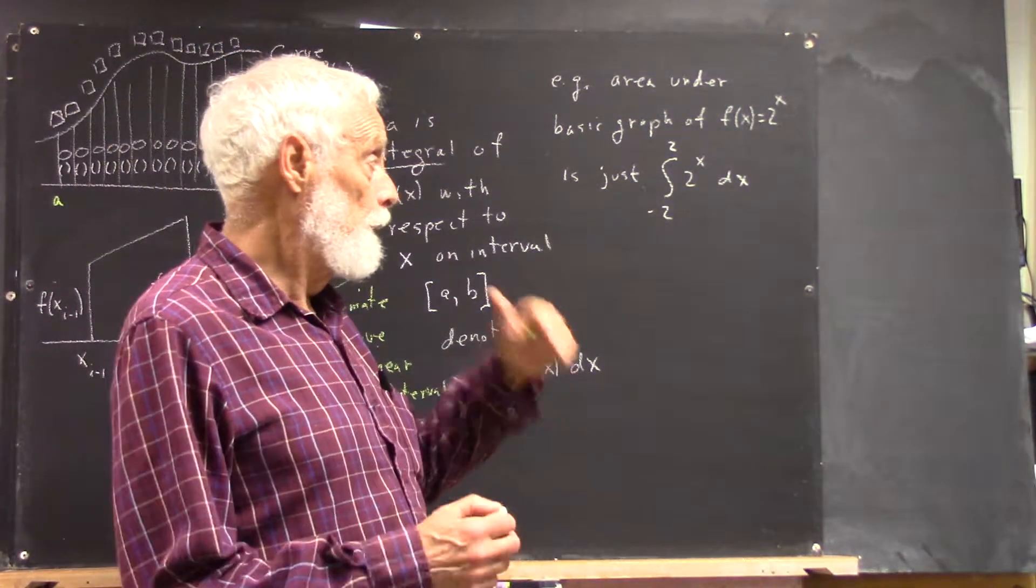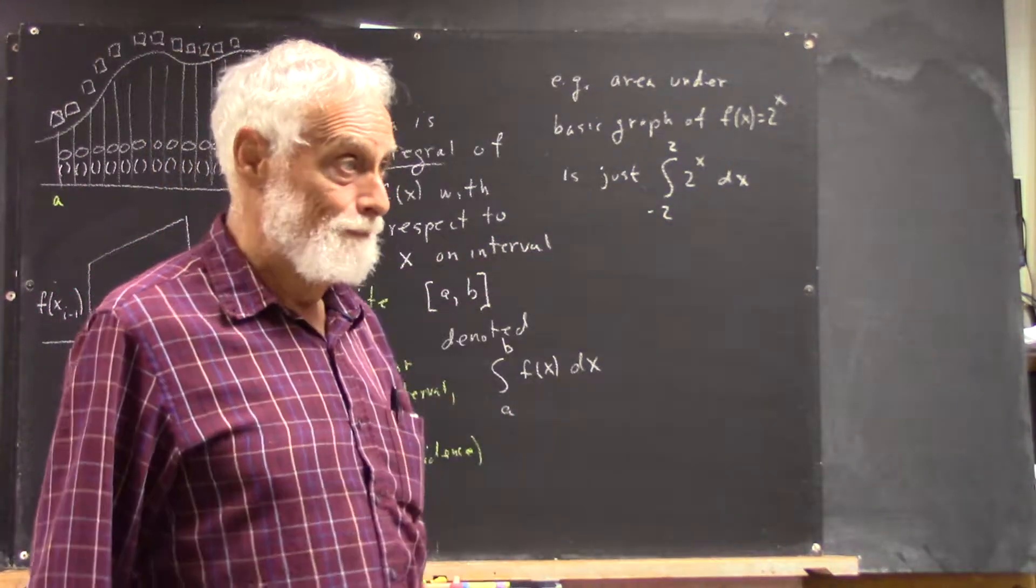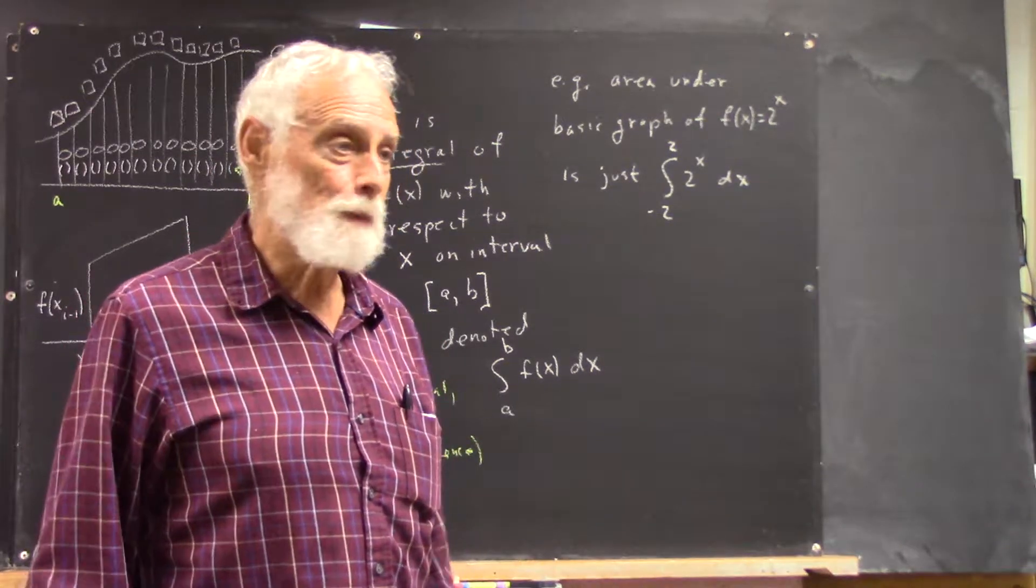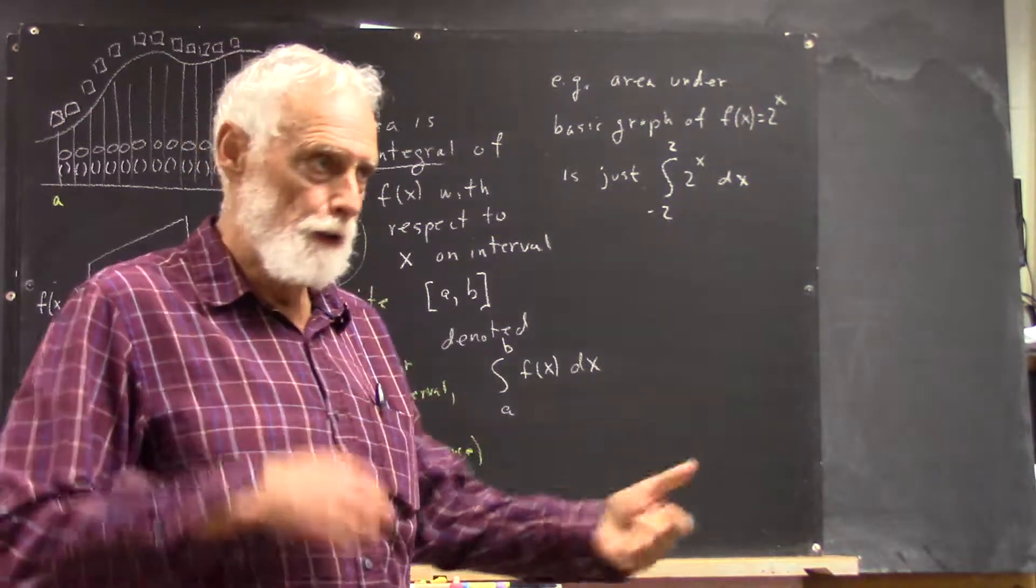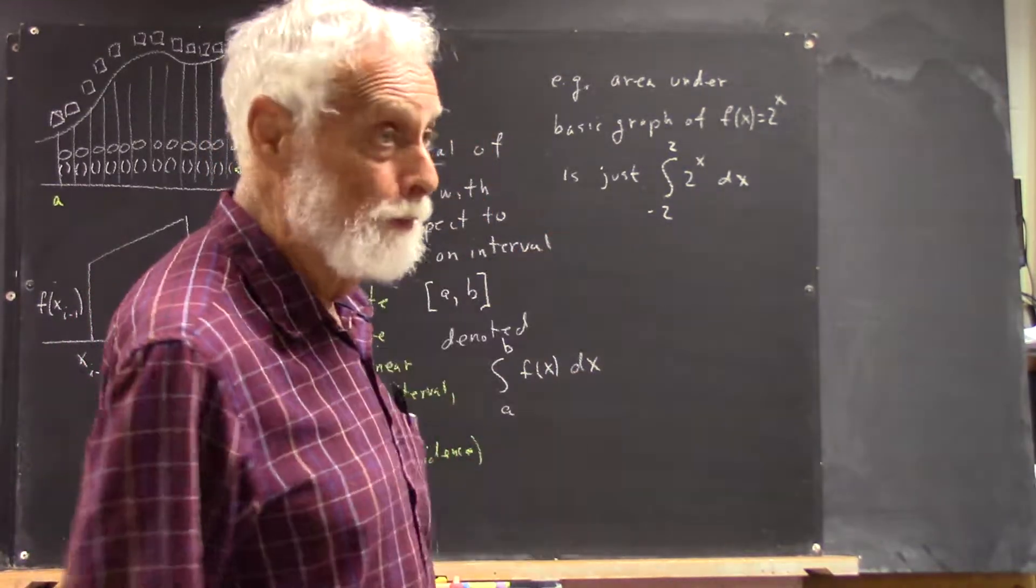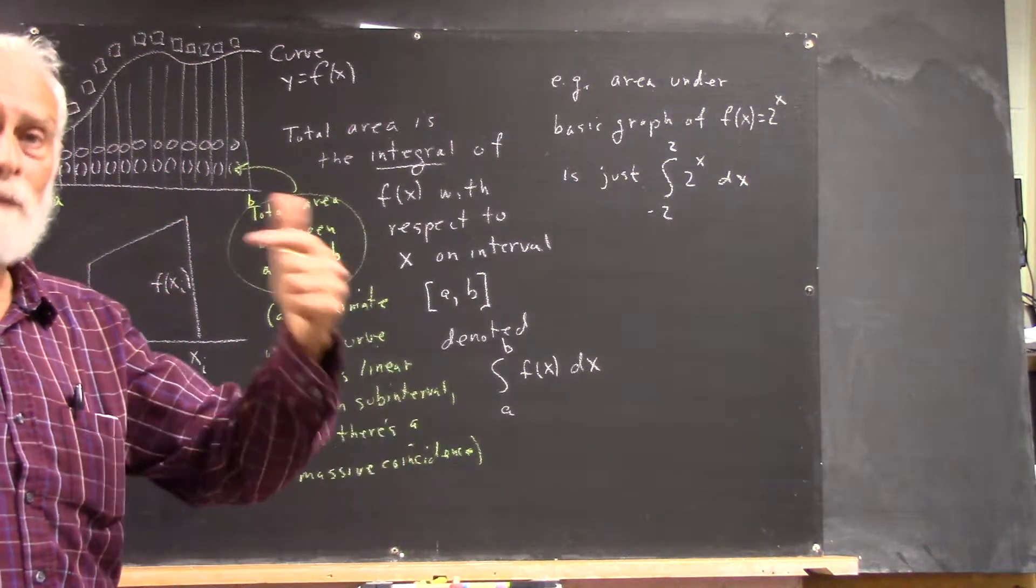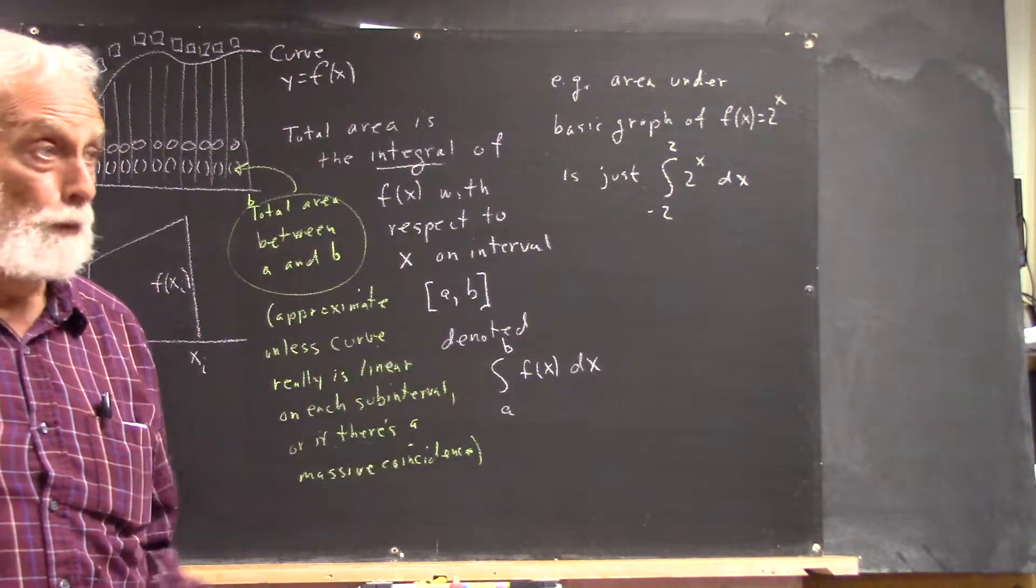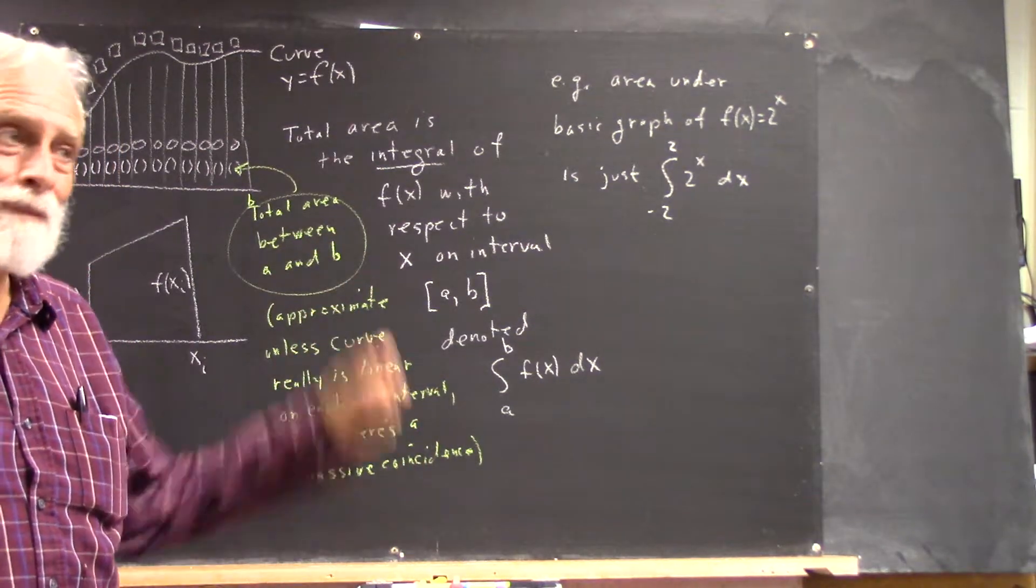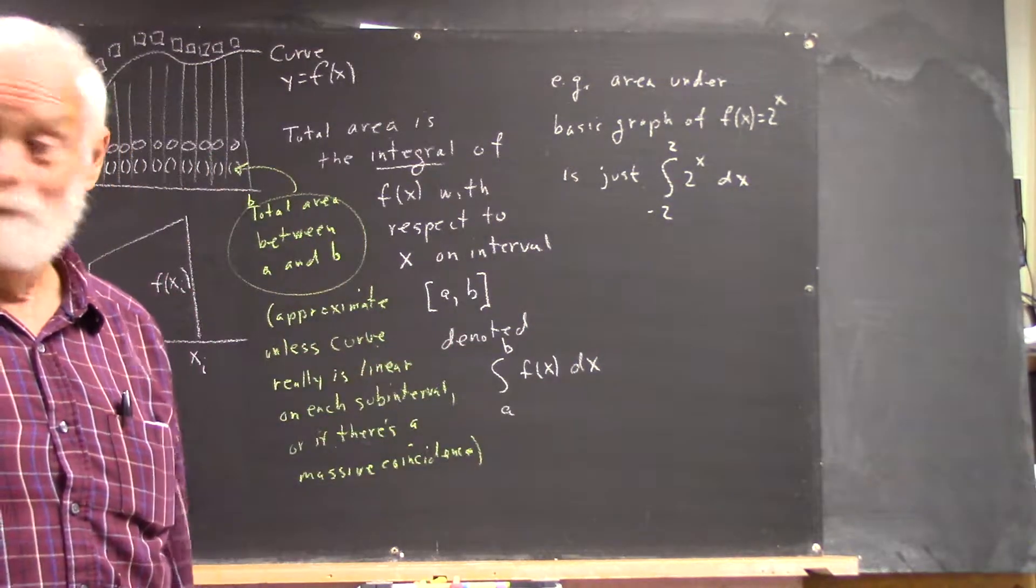And then you just put in 2 raised to the x and specify that x is the variable. You'd think it would know, but you have to tell it because sometimes you have more than one variable and you've got to integrate with respect to just one of them. There's a good reason why they insist that you tell it what the variable is, and then the -2 and the 2. That's all the information you've got to give it: 2^x, x is your variable, it goes from -2 to 2.